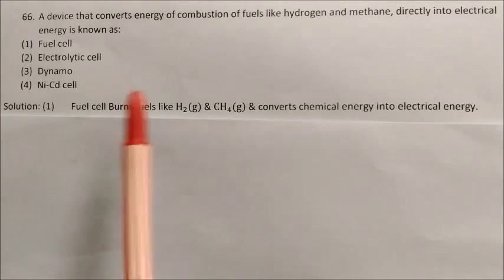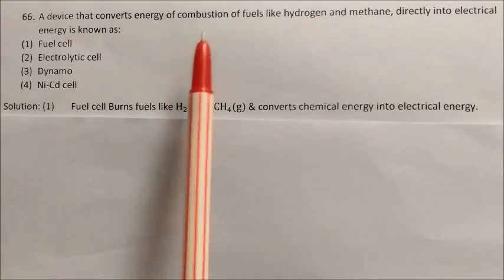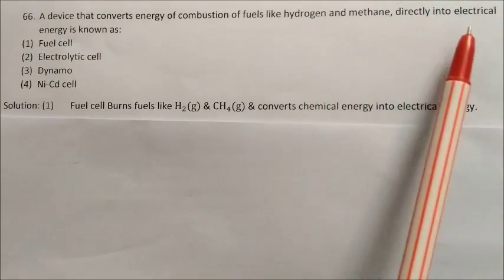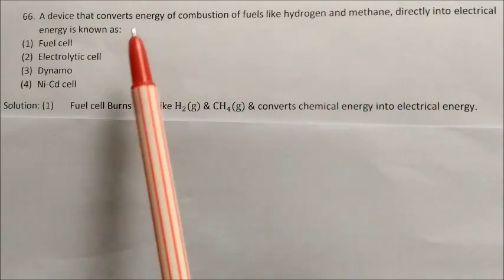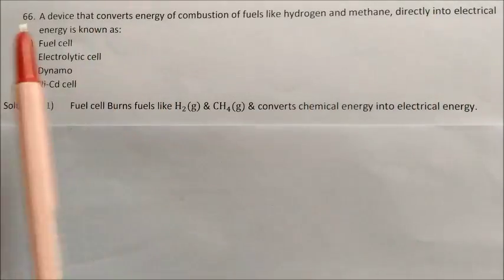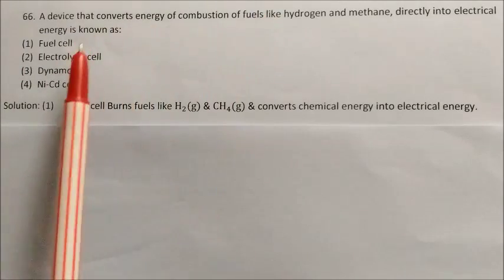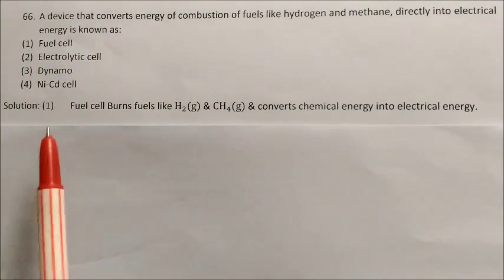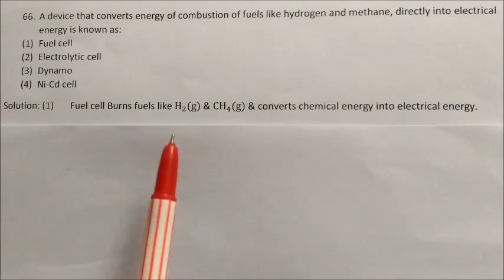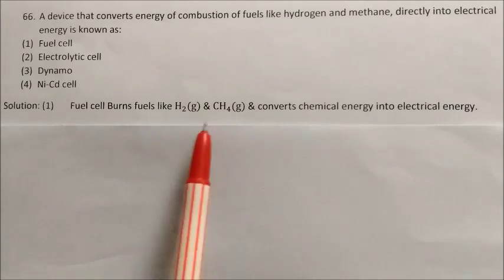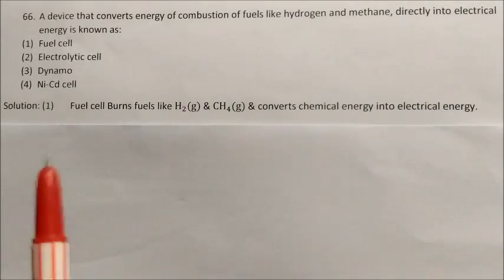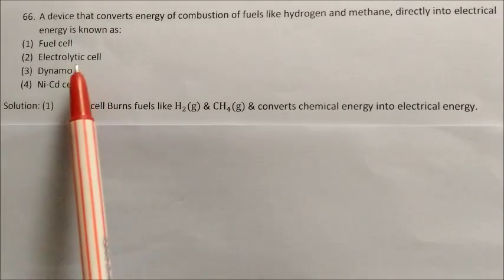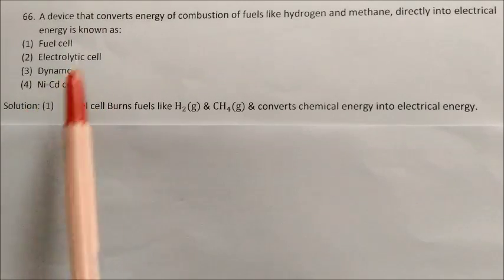Question: A device that converts energy of combustion of fuels like hydrogen and methane directly into electrical energy is known as? This device is called a fuel cell. Fuel cells burn hydrogen and methane and convert chemical energy into electrical energy. Electrolytic cells, dynamos, and nickel-cadmium cells are not possible answers. Answer: fuel cell.